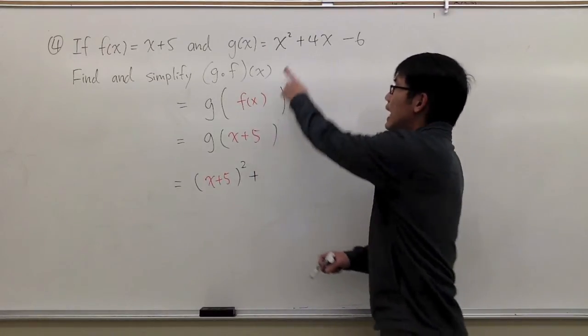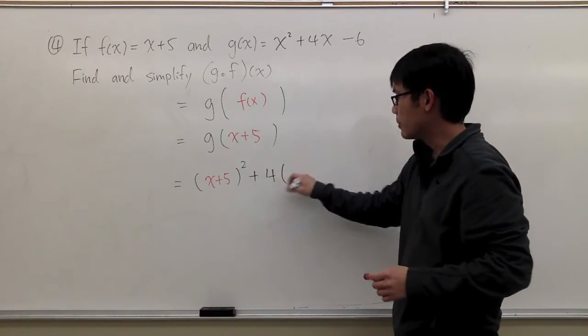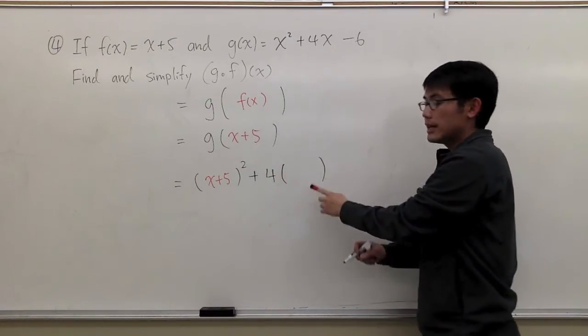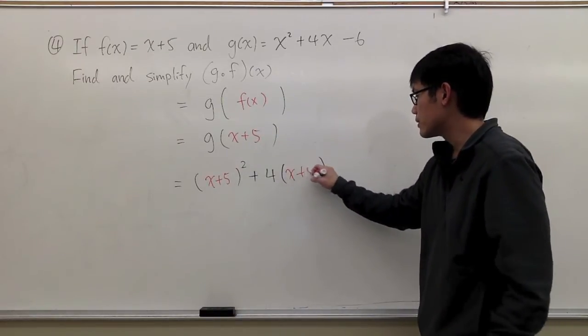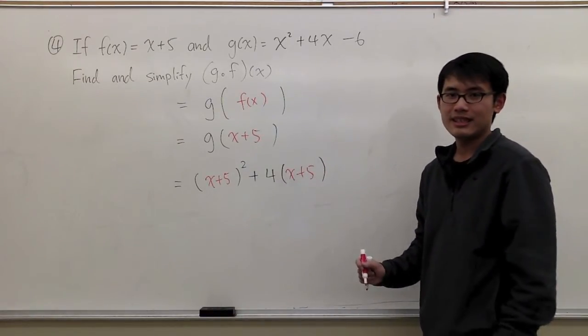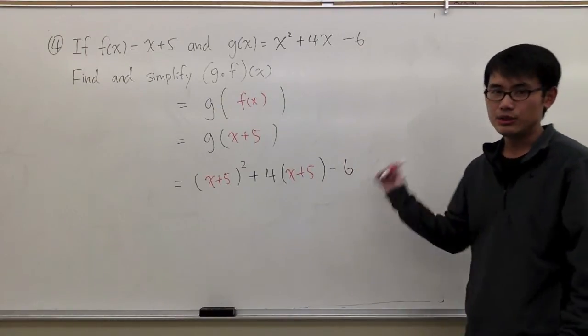I have plus. I have the 4x. So I will do 4. I open the parentheses for the original x, and I will plug in x plus 5 into these parentheses. And we also have minus 6 on the outside. Just like that.